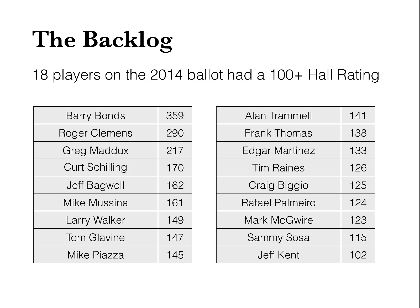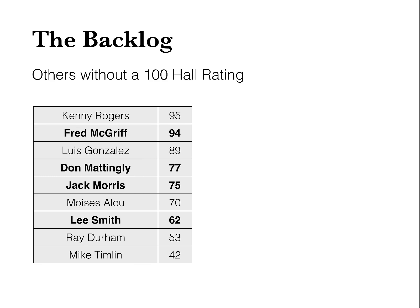So let's get into the backlog. There's a problem. There were 18 players on the 2014 Hall of Fame ballot that had a 100 or better Hall Rating, and that's almost twice as many players as you're allowed to vote for. And that doesn't even include four players that didn't have a 100 Hall Rating but received quite a few votes as well: Fred McGriff was very close, Don Mattingly, Jack Morris, and Lee Smith down at 62. So that's a good 22 players with solid Hall of Fame credentials that needed to be fit on a 10-person ballot.